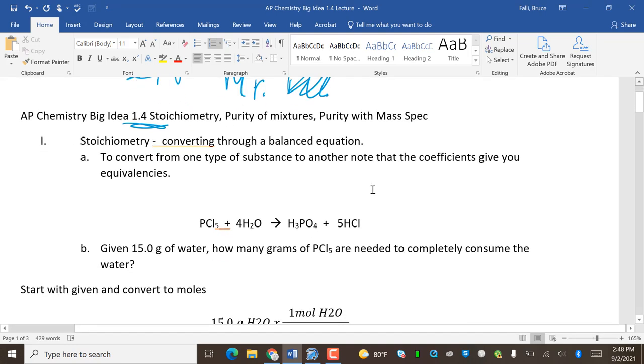Stoichiometry, converting through a balanced equation. To convert from one type of substance to another, note that the coefficients give you equivalencies. What I mean by that is one PCl5 needs four waters. So if I'm trying to convert from one to the other, I'll need four times as much water as PCl5.